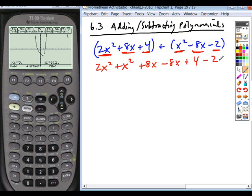Now you can just go through this horizontal method of combining these like terms. So what's 2x² and x² add up to?